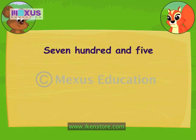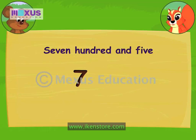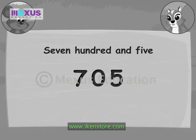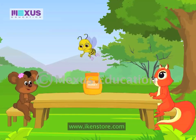Now identify the figures for the number given in words, Amber. 700 means the digit in the hundreds place is 7. The digits in the tens and ones place are 0 and 5. So the number is written as this. You are right, Amber.